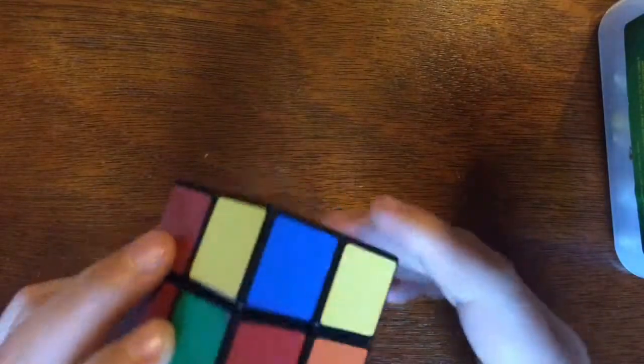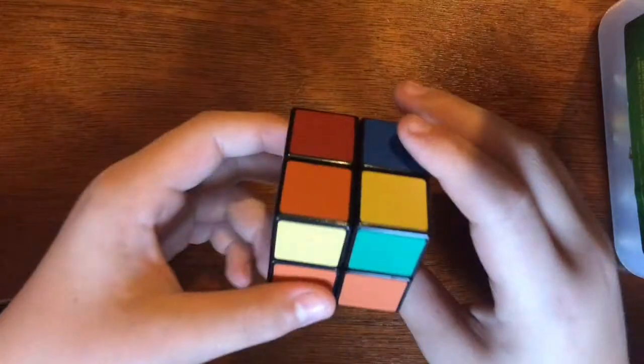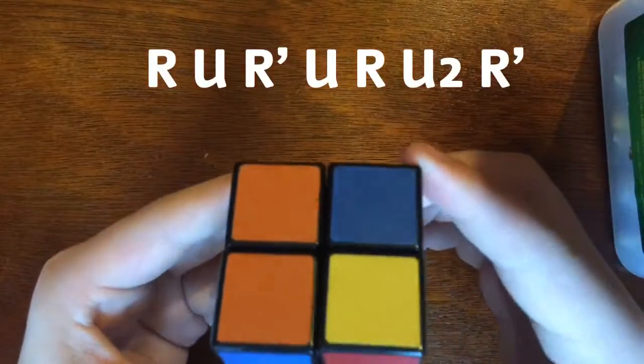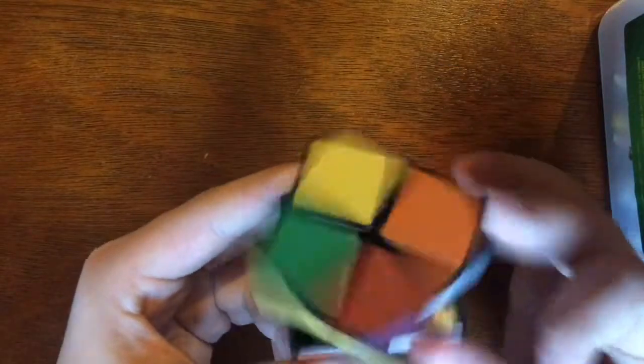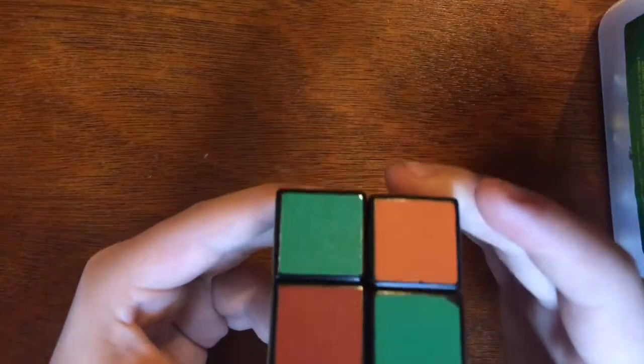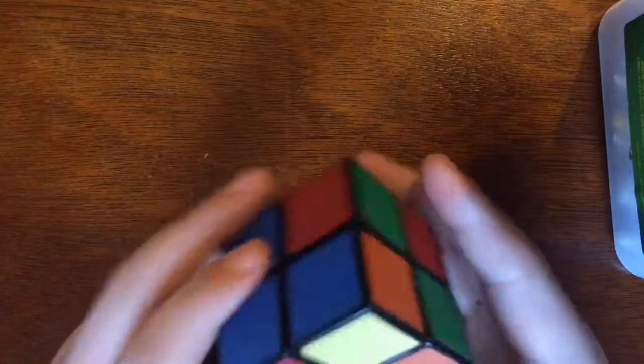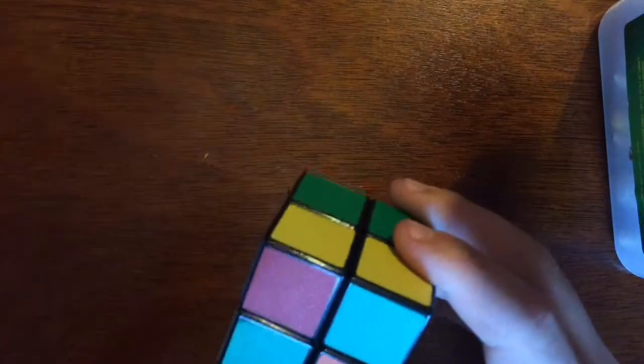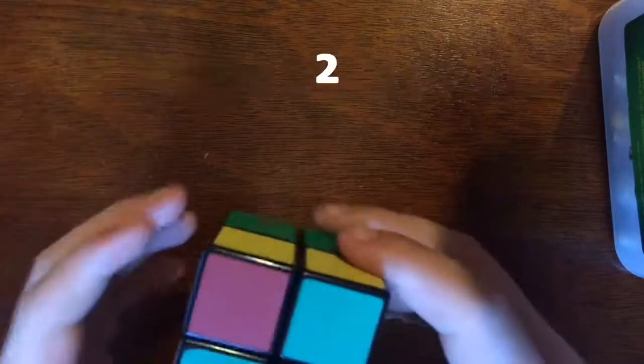Now we just moved around the pieces a little bit. So then we're going to do that algorithm again, which is right, up, right inverted, up, right, up two, and right inverted. Now we have these in the back, which we're going to want to show in the back.